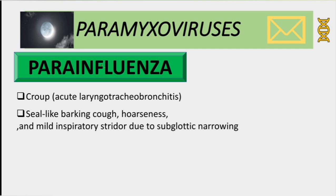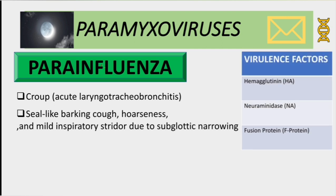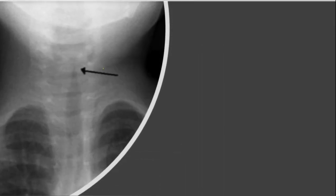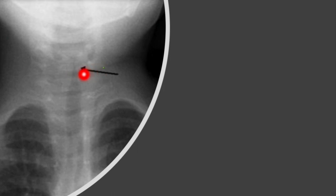On virulence factors for parainfluenza, we have all three: hemagglutinin, neuraminidase, and fusion protein. On X-ray, the subglottic narrowing appears as a specific sign known as the steeple sign — this is the narrowing of the subglottic region, with right and left orientation visible on the image.